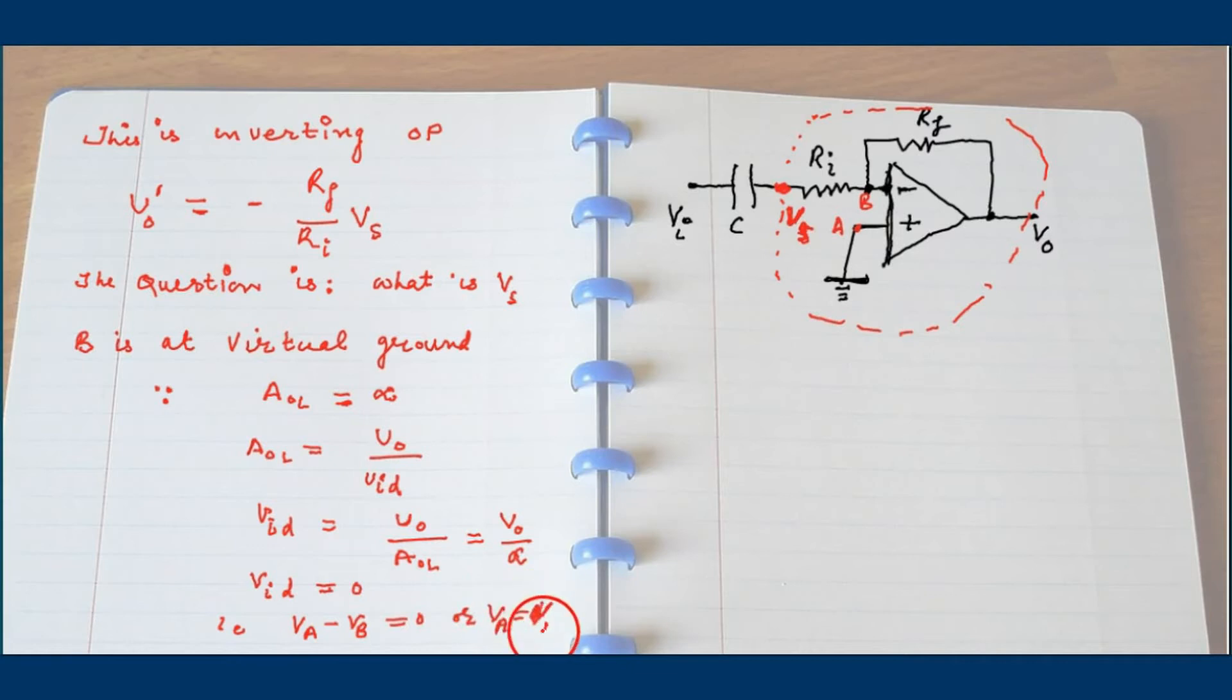So this is an ideal condition, but approximately also VB and VA will be approximately same. So VB will be also at the ground potential, that is zero.